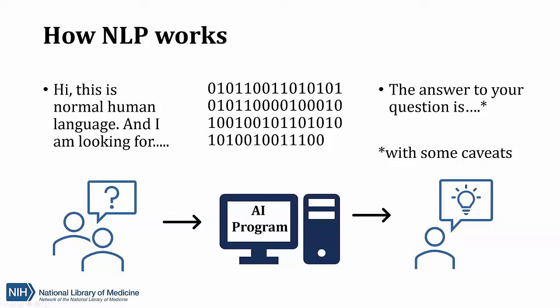NLP models and algorithms can be trained to respond to questions, write essays, translate text into another language, or even give verbal directions while you're driving. NLP is where computer science and linguistics — the study of languages — combine. NLP allows computers to understand and mimic human language and speech; it can perform complex computations and process large datasets much faster than any human.